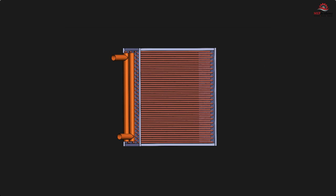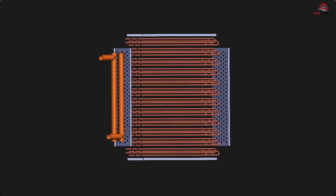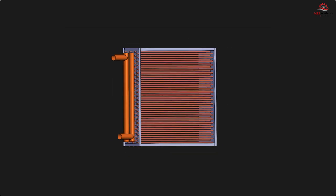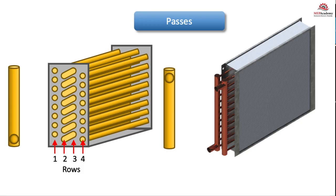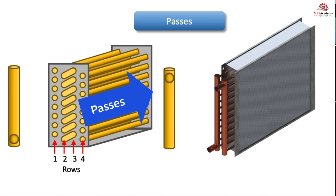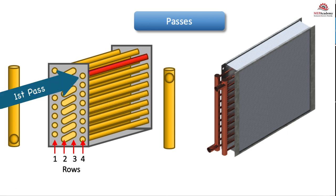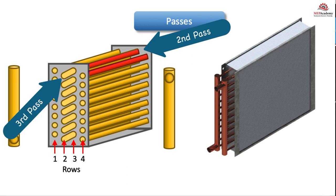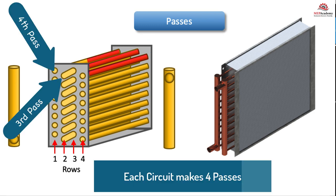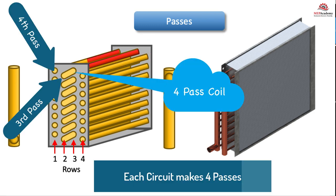The term coil passes refers to the number of times water traverses from one end of the coil to the other, starting at the inlet. Going up and back would be one round trip, considered a two-pass coil — once across and then the second pass would be returning.